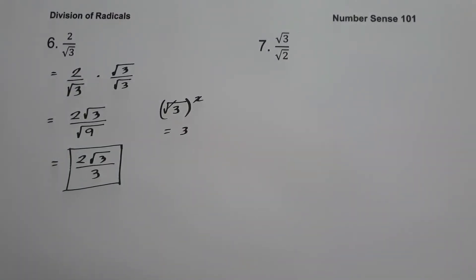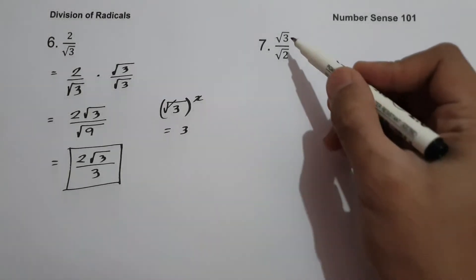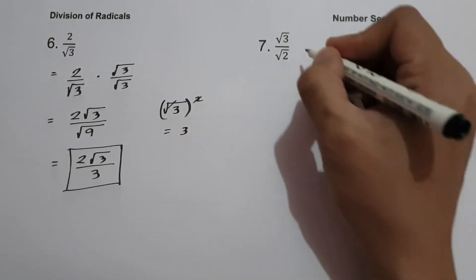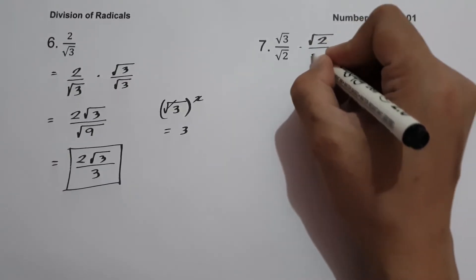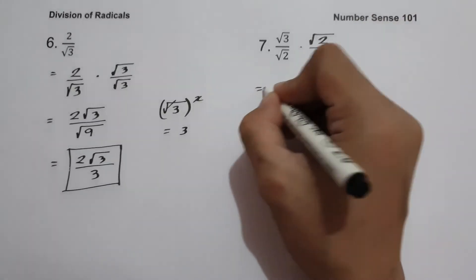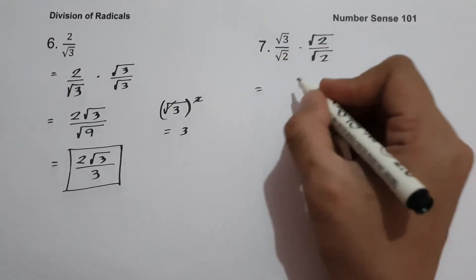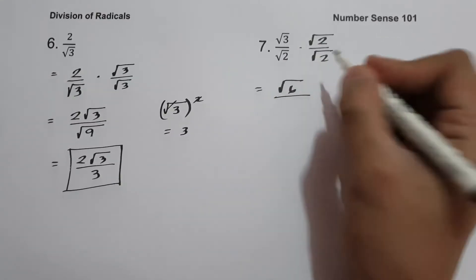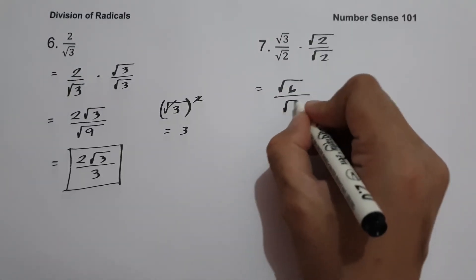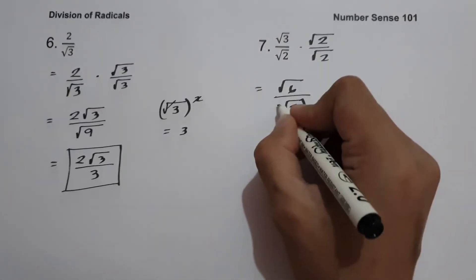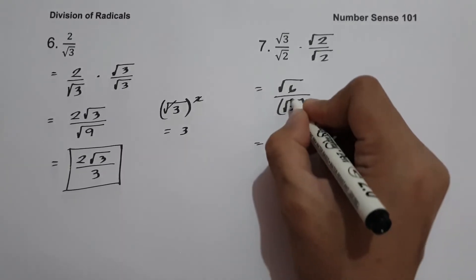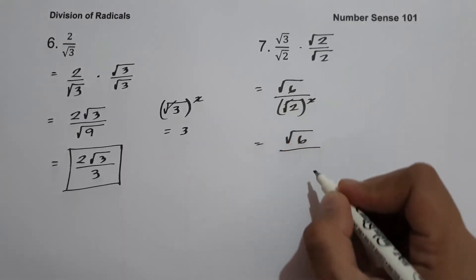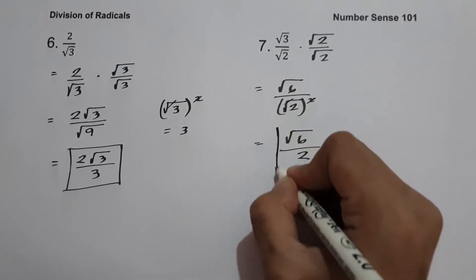On example number seven, we have square root of 3 over square root of 2. Again, we can't divide directly, so let us rationalize by multiplying the numerator and denominator by square root of 2. Square root of 3 times square root of 2 is square root of 6, and square root of 2 times square root of 2 is square root of 2 raised to 2. Canceling the radical sign and exponent 2 gives 2. So the answer is square root of 6 over 2.